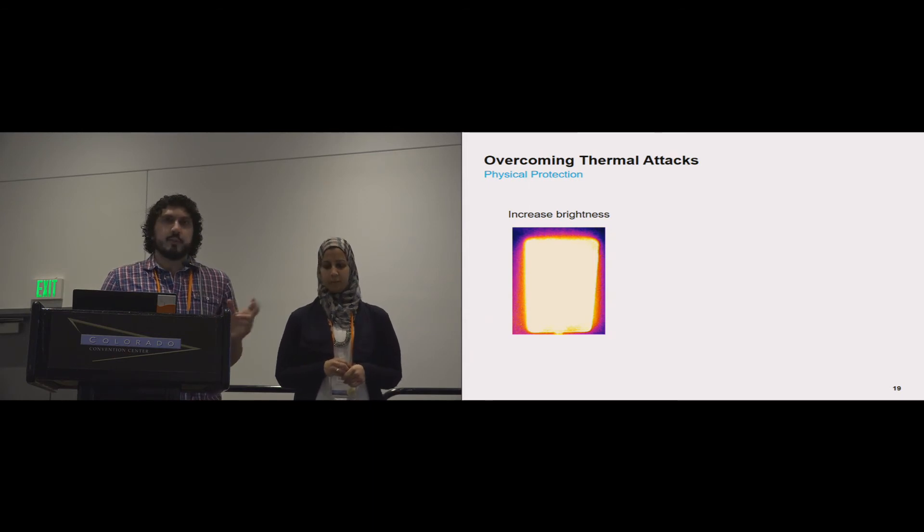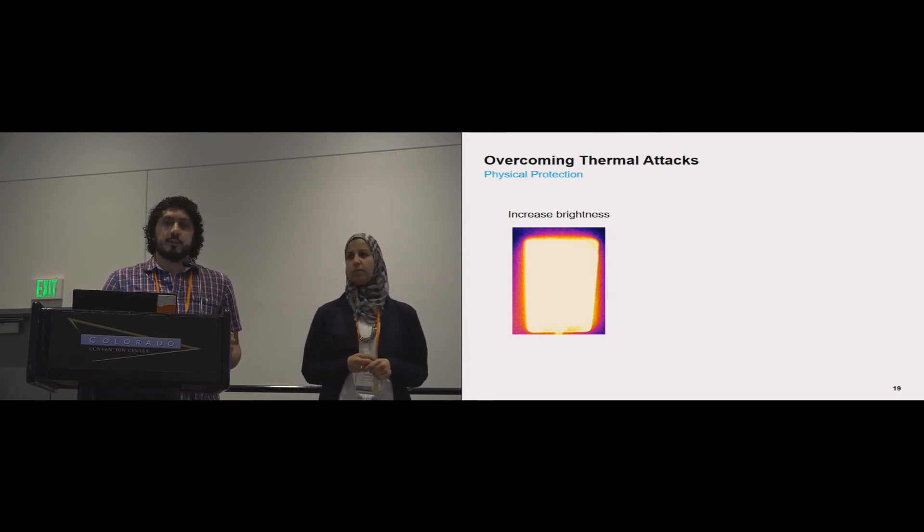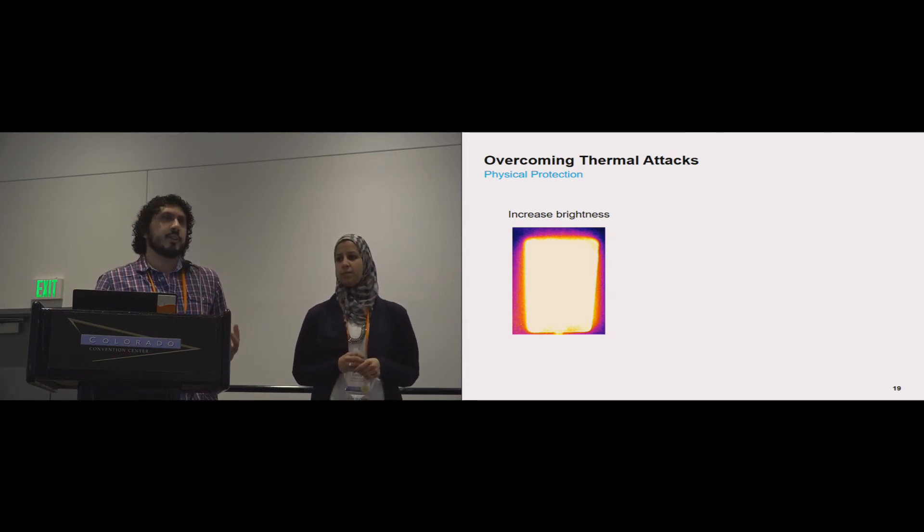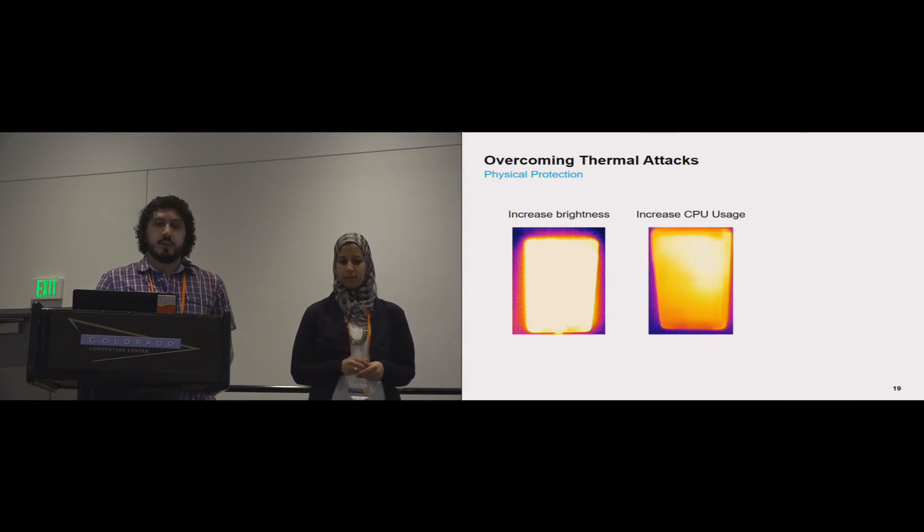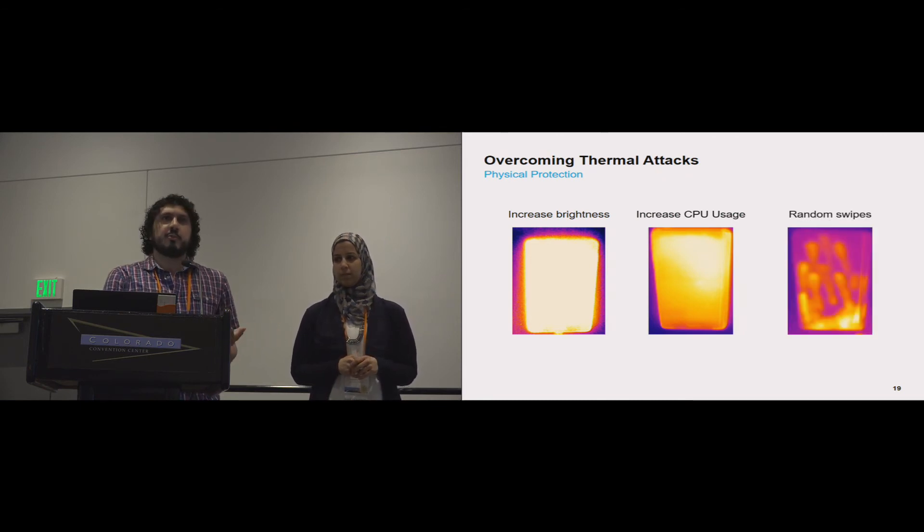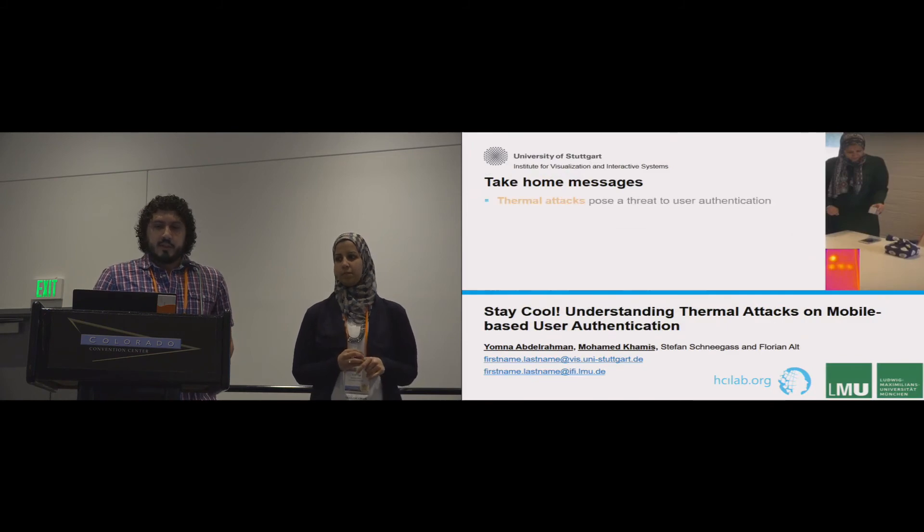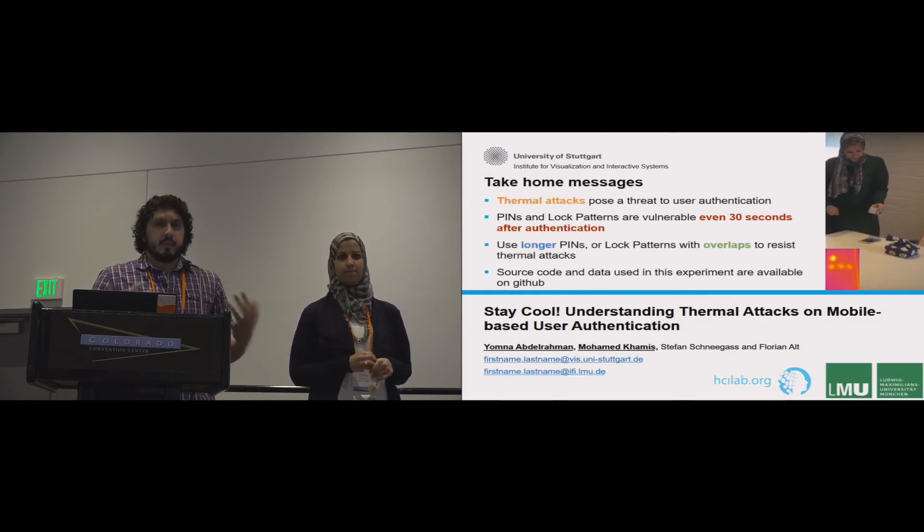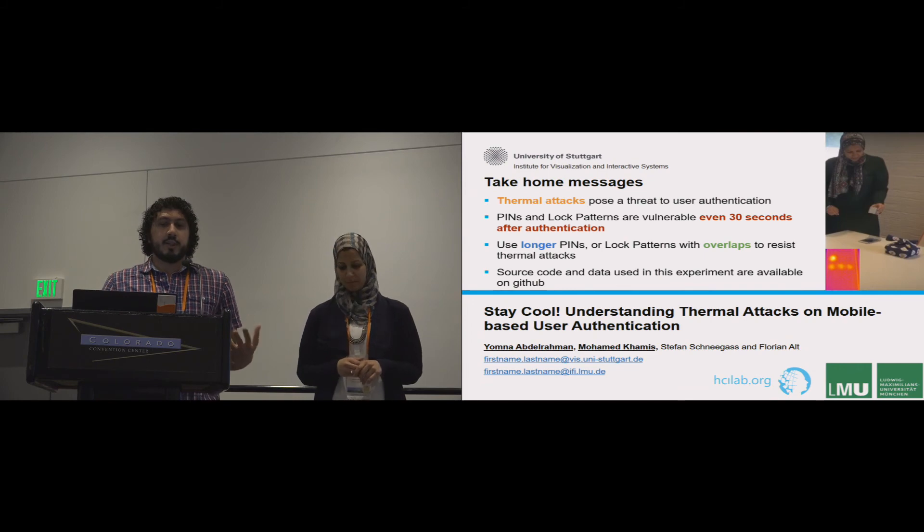In addition, we thought about some protection measures that we refer to as physical protection measures. Basically, if you increase the brightness of the screen or if you load a task that increases the CPU usage, you essentially heat up the phone and this erases any heat traces out there. One easy workaround is also to do some random swipes on the phone, and this will distort the heat traces and make it harder to perform thermal attacks.